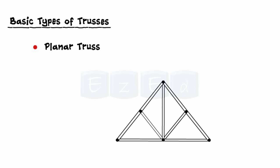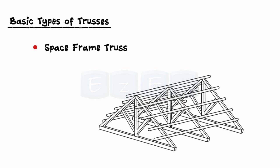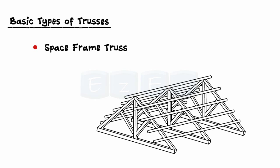The following are the basic types of trusses. The planar truss is simply a two-dimensional truss which lies in a single plane. A space frame truss is simply a three-dimensional truss. Actual structures are made of several two-dimensional trusses joined together to form a space frame as shown.